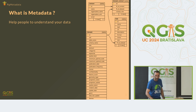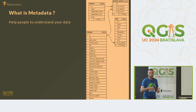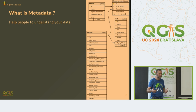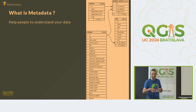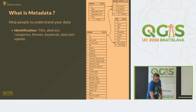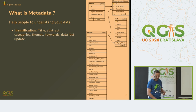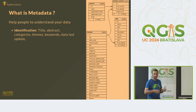So first, what is metadata? I guess you know — it's to help your users to know your data. It's data on your data. What do we mean? We mean identification: title, abstract, categories, and keywords about your data.